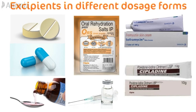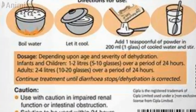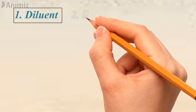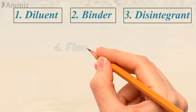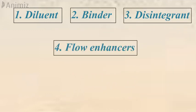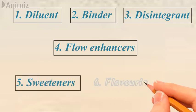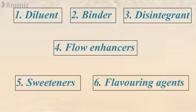Then we have powders or granules packed in the form of sachets. These contain diluents, binders, disintegrants, flow enhancers, sweetening agents, and flavoring agents. All these excipients are similar to those used in tablets. The only difference is that the powder is not compressed into tablet form.